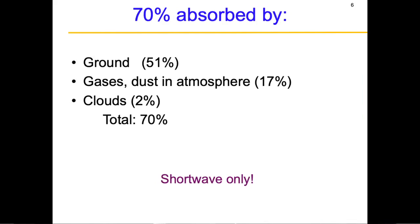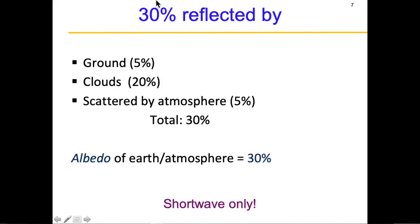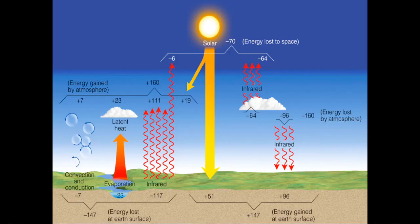Out of the 70% absorbed, which is short wave only, 51% comes to the ground. The gases and dust in the atmosphere take up 17%, and clouds take up about 2%, as clouds can also trap energy. So the 30% reflected back is the albedo of the earth-atmosphere system, due to reflective surfaces on the ground, scattering from the atmosphere, and scattering from clouds. Out of the 70%, 51% comes to the ground and 19% is taken up by clouds and atmosphere.